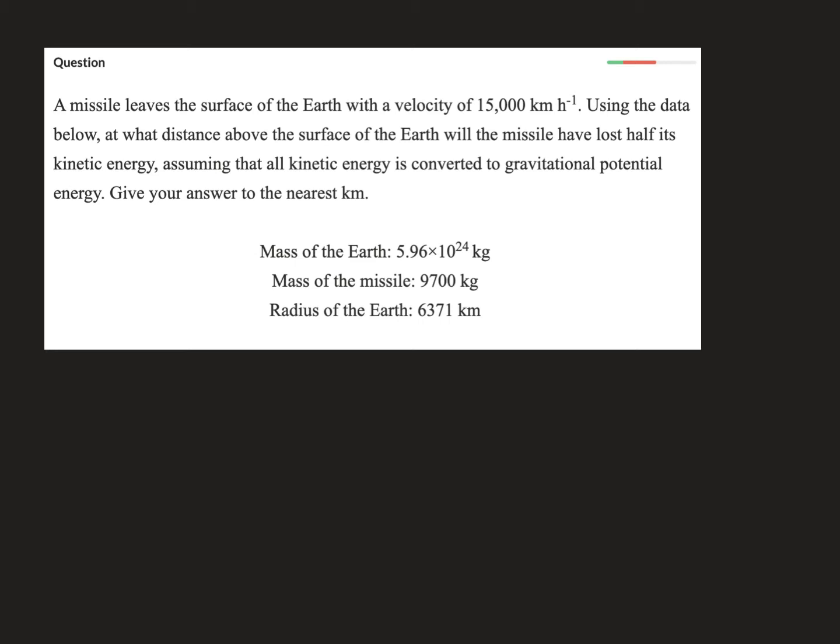A missile leaves the surface of the Earth with a velocity of 15,000 km per hour. Using the data below, what distance above the surface of the Earth will the missile have lost half its kinetic energy, assuming it all goes into gravitational potential energy? So in other words, there's no energy turning into heat, or I should say thermal energy.